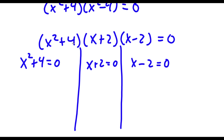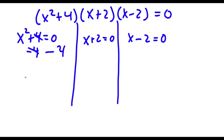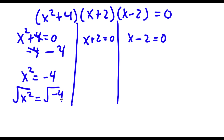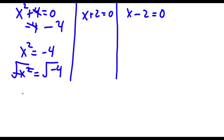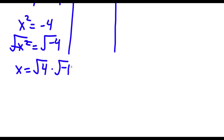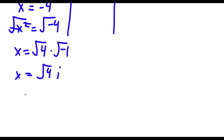For x squared plus 4 equals 0, I'm going to first subtract 4 on both sides. So now these two cancel out and I'm left with x squared is equal to negative 4. To solve this, I'm going to take the square root on both sides. The square root of x squared is simply equal to x. So I have x is equal to the square root of negative 4. That's the same thing as the square root of 4 times the square root of negative 1. The square root of negative 1 equals i. The square root of 4 is positive or negative 2. So I have x equals positive or negative 2i.